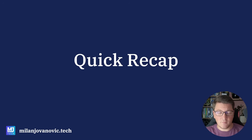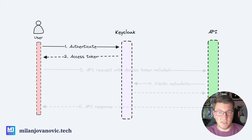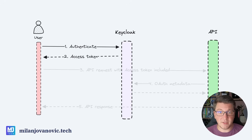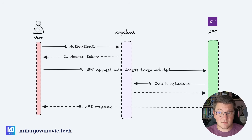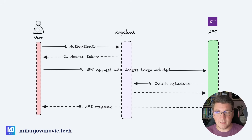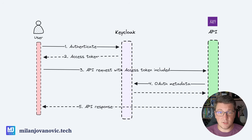Here's a quick recap of what we already covered in the Keycloak series. In the first video, we focused on just setting up Keycloak, authenticating with the Keycloak identity provider, and obtaining an access token. In this video, we're going to cover the second part of this diagram, which is actually sending an access token to our backend API, which is going to validate the access token with Keycloak, and if this is a valid access token, it's going to return an API response.